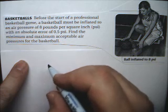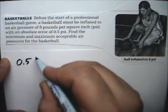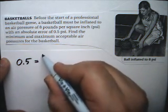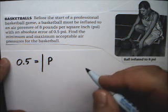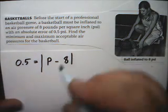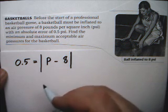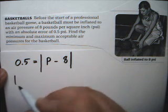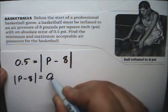It says that you take the measured pressure, so the absolute error can be 0.5. The absolute error is equal to the absolute value of the measured pressure take away the accepted pressure. So we end up with this absolute value equation. The absolute value of p minus 8 is equal to 0.5.